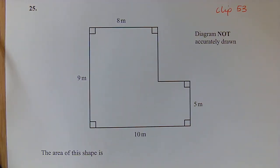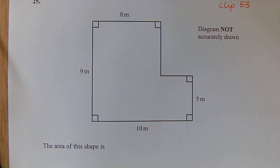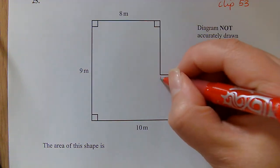And then finally, question 25: We're looking at the area of this shape. So this is a compound shape, so what we need to do is split it up into two rectangles. What I'm going to do is I'm going to split my two rectangles here. I'm going to label this one A, this one B.